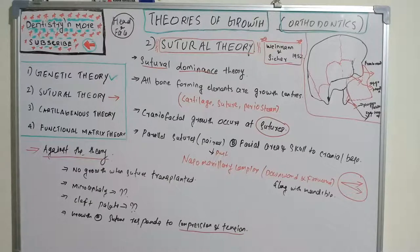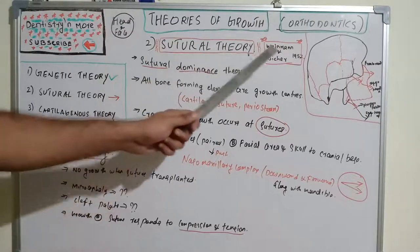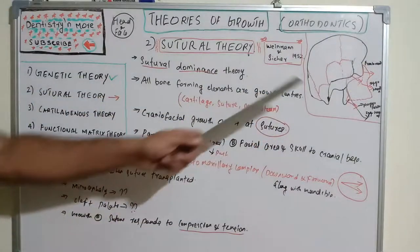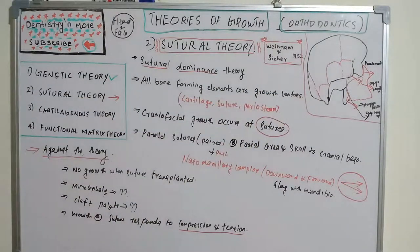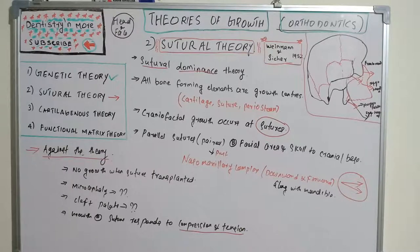To summarize sutural theory — also called sutural dominance theory, given by Weinmann and Sicher in 1952 — the paired sutures push the nasomaxillary complex forward and downward. It is not accepted because it cannot explain microcephaly, hydrocephaly, or cleft palate, and transplanted sutures showed no growth. Next, we move on to cartilaginous theory.